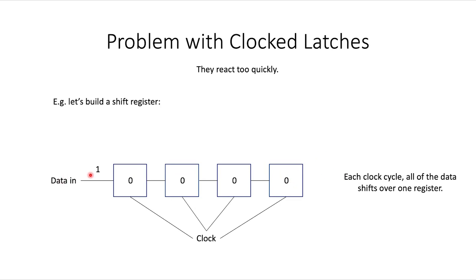Let's say I give a one on the input wire, then I change my clock — I turn the clock on. That one got shifted into the first position and all the zeros got shifted over. If I keep my input wire as a one, I can do this again. I run the clock again and now both of my ones have shifted into the first two positions and there are zeros at the end.